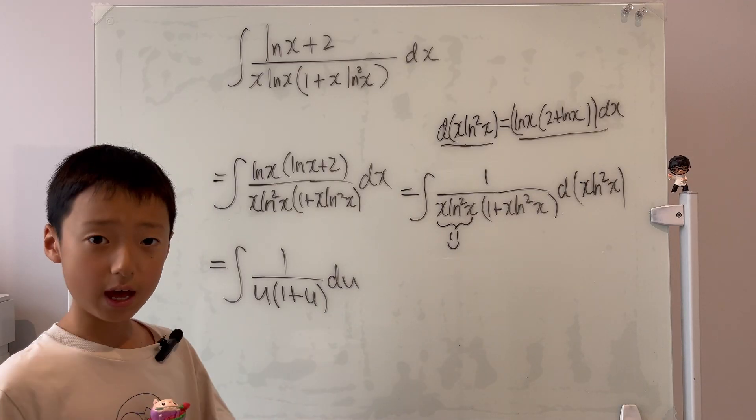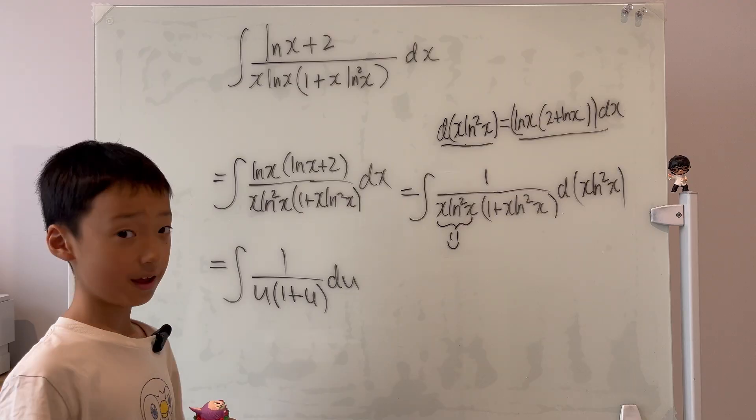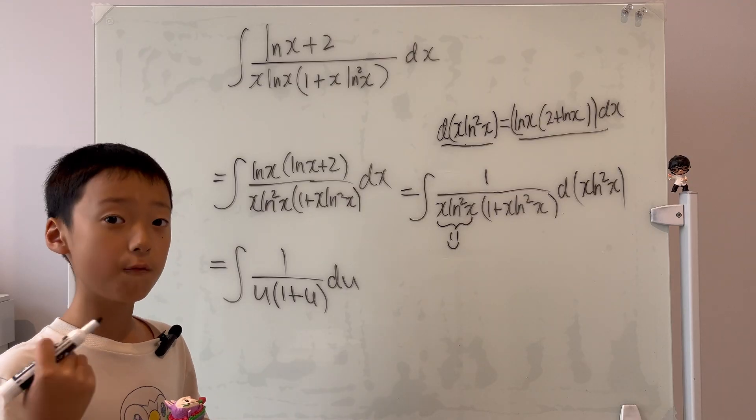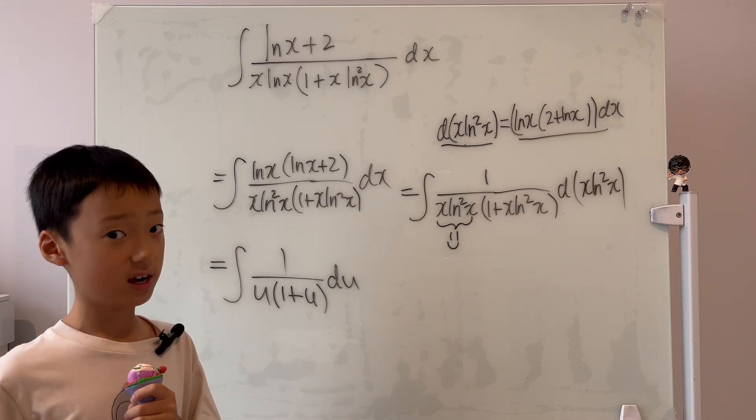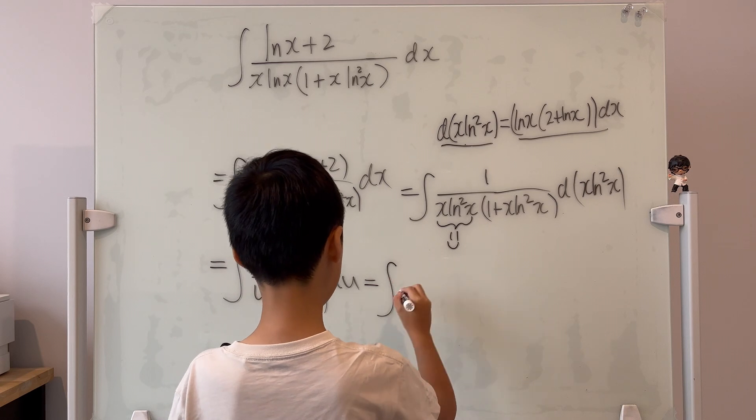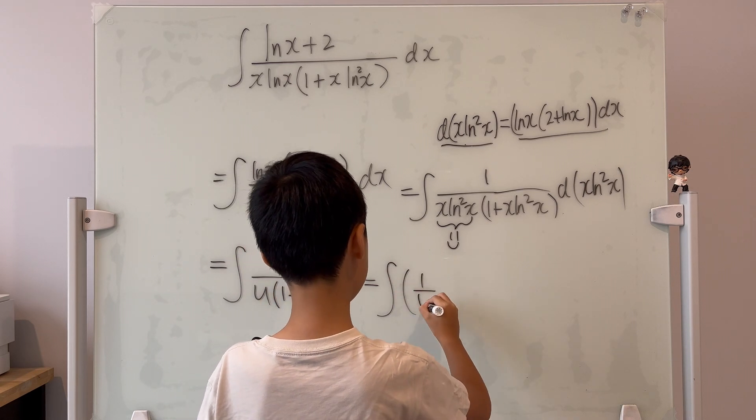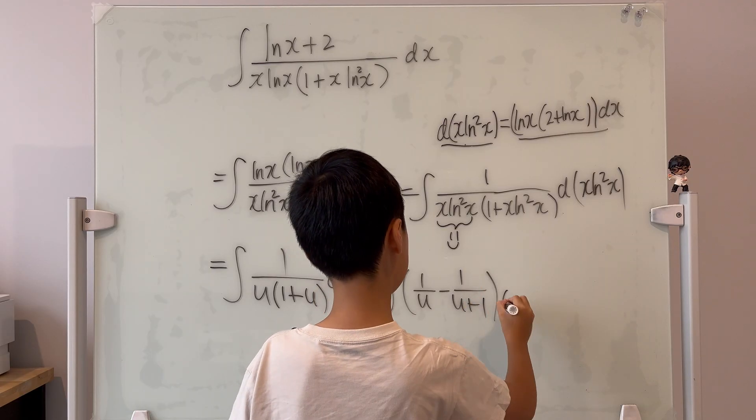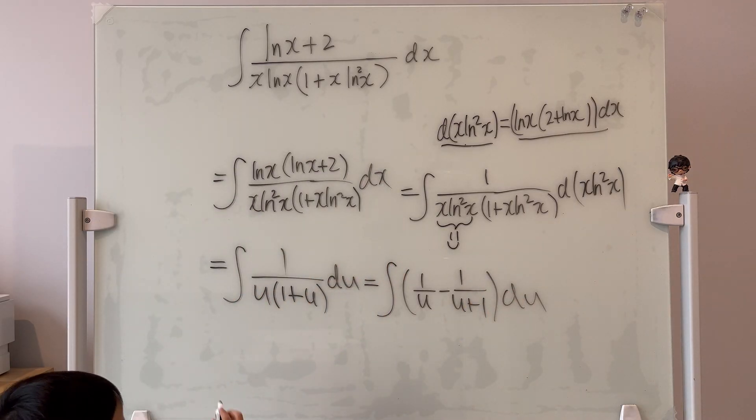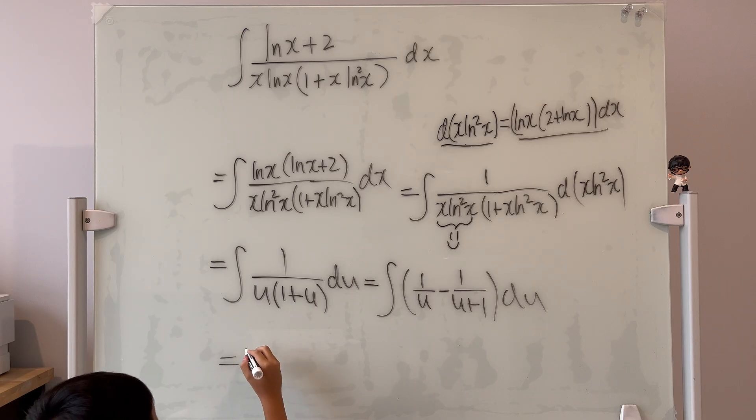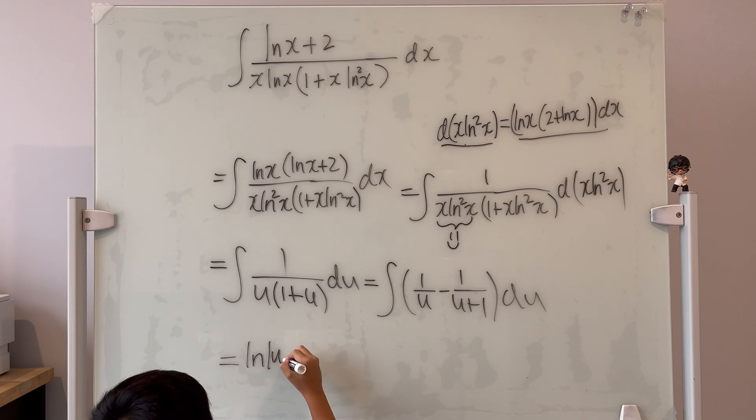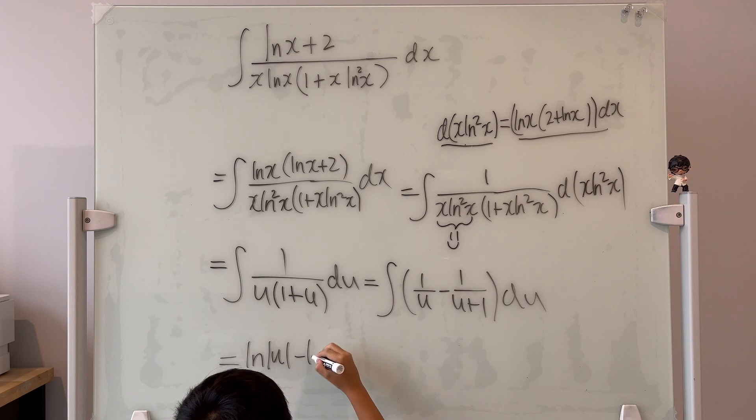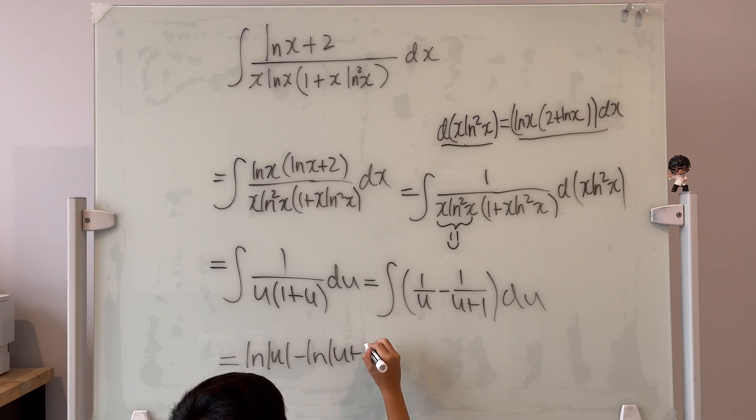So from here, we have a classical partial fractions and I'm not going to do the work. You can verify that my working out is correct. It's equal to the integral of 1 over u minus 1 over u plus 1 du.